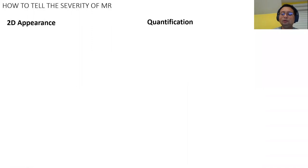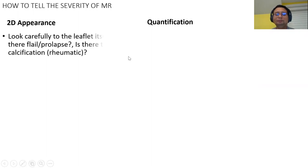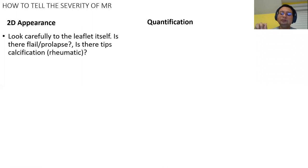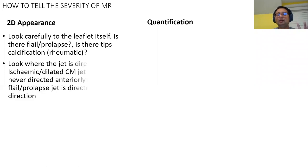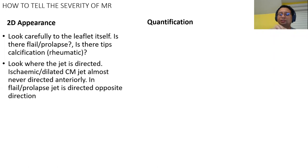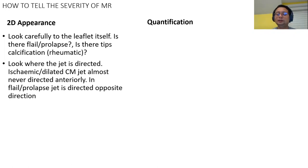When you see someone with mitral regurgitation on echo, assess severity as follows. Number one: look at 2D appearance — any prolapse or flail? Number two: is the leaflet calcified? If calcification starts from the tips, it is rheumatic; if from the annulus, it is degenerative. Number three: look at jet direction. In prolapse or flail, the jet goes in the opposite direction — posterior leaflet prolapse gives anterior jet; anterior leaflet prolapse gives posterior jet. In ischemic MR, dilated cardiomyopathy, and rheumatic MR, the jet is almost always posteriorly directed. In annular dilatation from chronic AF or very large LV, the jet can be central.